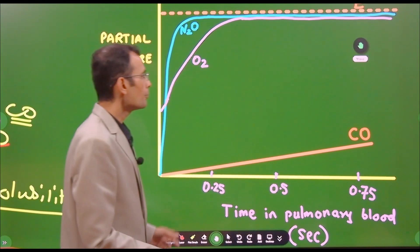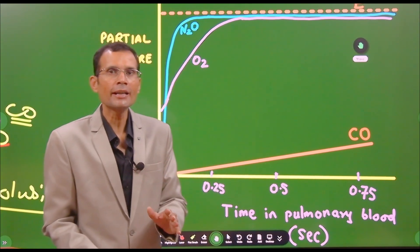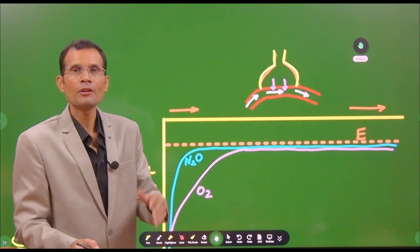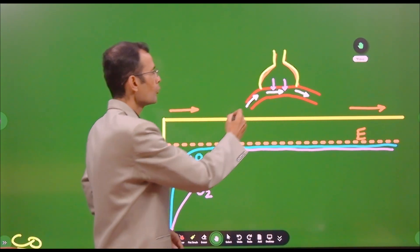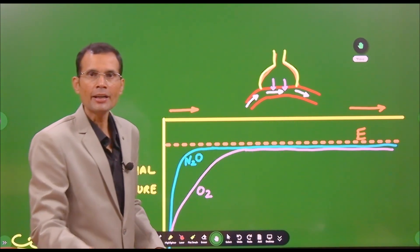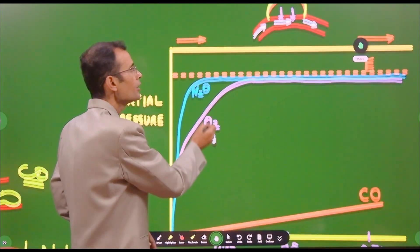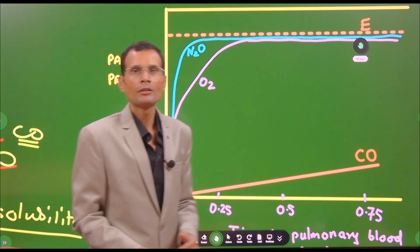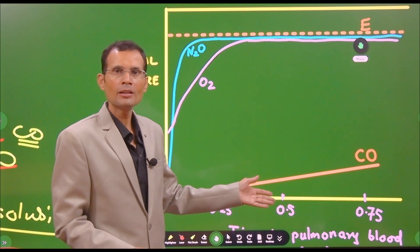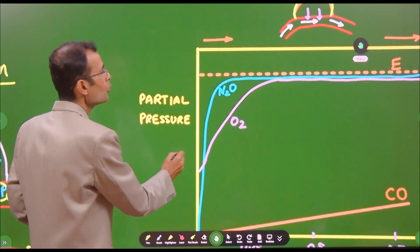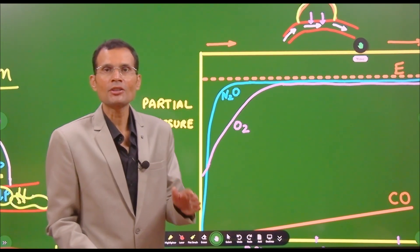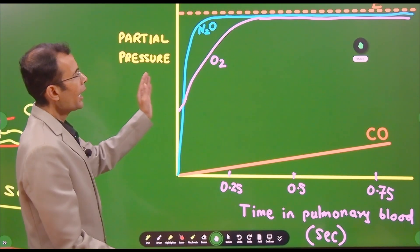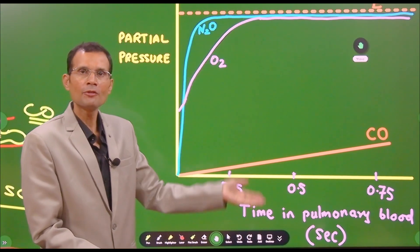Remember, 0.75 seconds is the transit time of an RBC through the pulmonary capillaries — the rate of blood flow through the lungs. While the blood is flowing at that rate, we can observe the behavior of various gases. Carbon monoxide: partial pressure not rising much in the blood. N2O: partial pressure instantly rising, reaching equilibrium from alveolus to blood almost immediately.